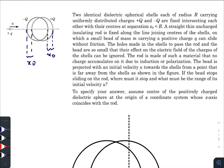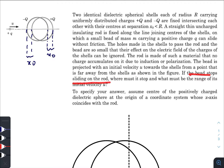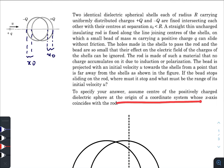The bead is projected with an initial velocity u towards the shell from far away, as shown in the figure. If the bead stops somewhere while sliding on the rod, we need to find where it must stop and what must be the range of its initial velocity u. We assume the center of the positively charged dielectric sphere as the origin of the coordinate system.